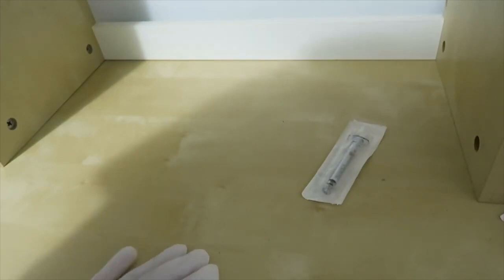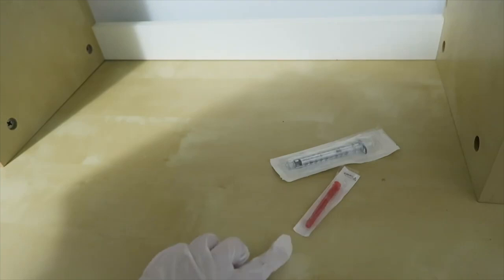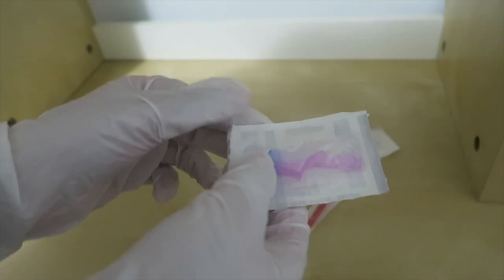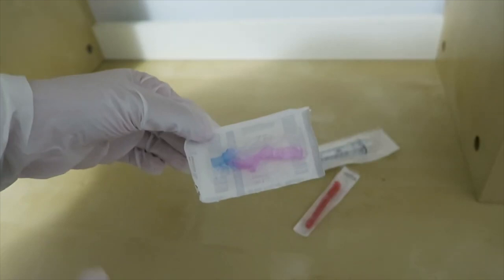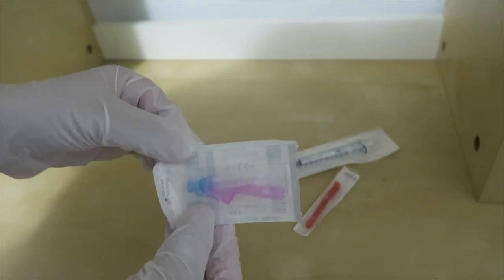So today, because we are administering 1ml of vitamin B12, I've chosen my 1ml syringe. I also have my blunt fill needle, which will be used to draw up the medication. And I have chosen my 23 gauge and 1 inch needle to administer this medication. And the reason I've done this is because the medication is not too viscous. So the 23 gauge will be perfect.